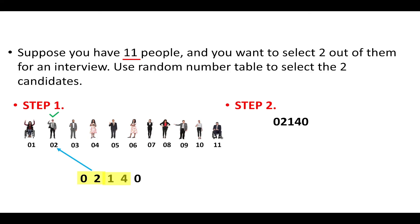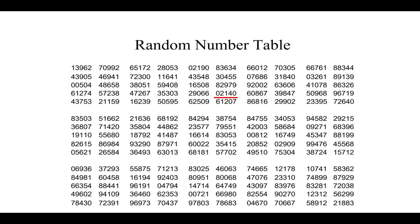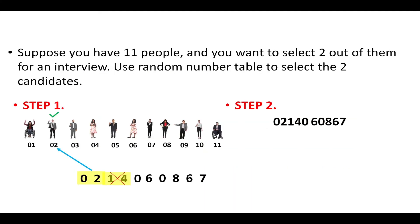The next number is 14 — since 14 is not in our group, we reject it. The next number is a single digit 0, so we go and select another random number from the table. Suppose we now select 60867. The digits 6 and 0 form 06, so we select the 6th person.